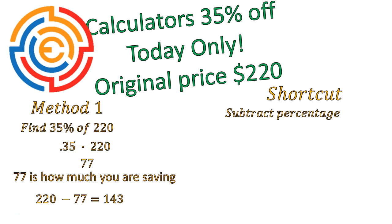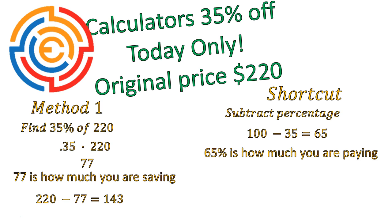Instead, look at the shortcut method. We're going to subtract percentages. You know your original price is 100% — that's where you start. So I'm going to take 100% minus the 35% and get 65%. What this means is 65% of the original cost is how much I am paying — that's the amount I actually have to pay. So I calculate what is 65% of 220. I convert my percent into a decimal — of means multiply — and I get $143. My answer at the end is the same, but for me, the shortcut makes a little bit more sense. I'm calculating first the percent I need to pay, and then the amount I need to pay.